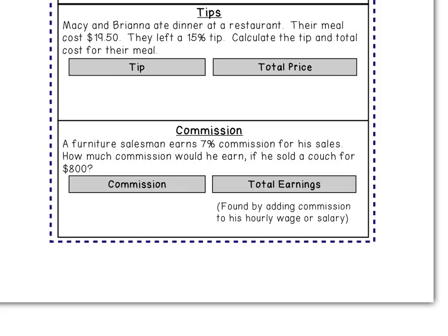To solve this, take the information from the problem and create a question. We know they leave a 15% tip on a bill of $19.50, so I ask: what is 15% of $19.50? Using the percent equation: x = 0.15 × 19.50.